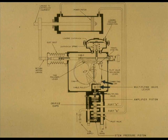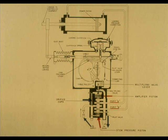This is a sectional view of the pilot. Locate the connecting link, the multiplying valve, also locate the amplifier piston, the stem pressure piston, the orifice cups, the oil supply and drain ports, and ports A and B.